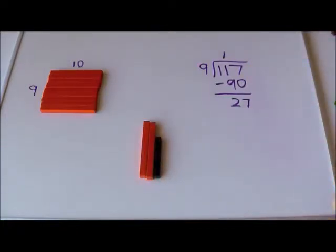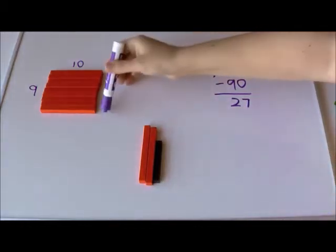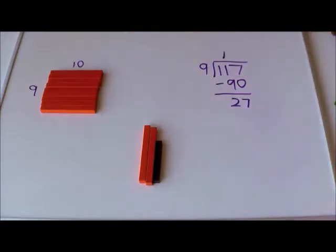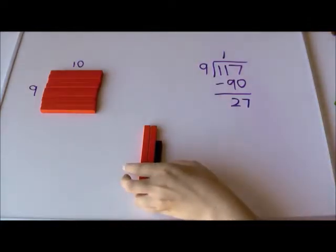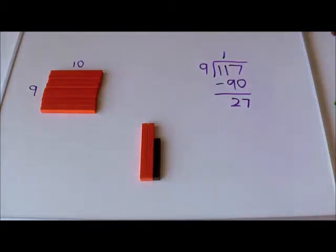So now we have 27 here. We want to make a rectangle with 9 on one side and something else on the other side. So we're thinking 9 times what is 27, and hopefully your students will automatically think 3. 9 times 3.